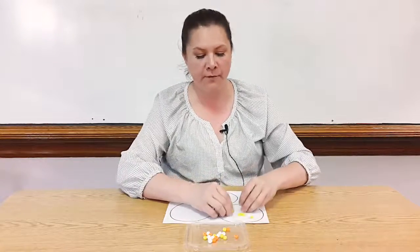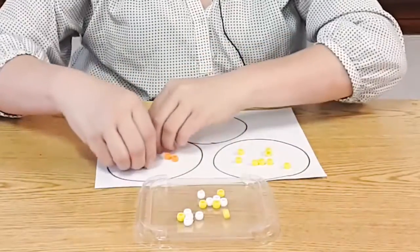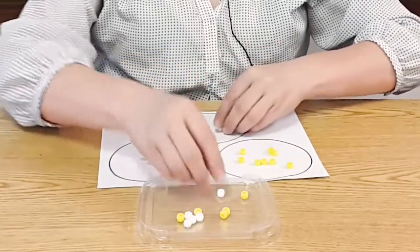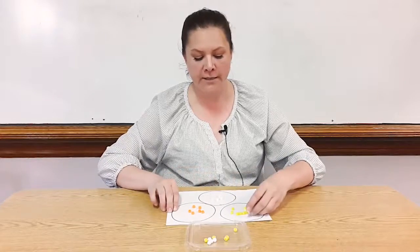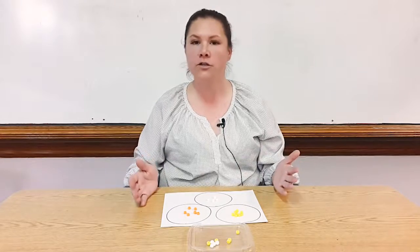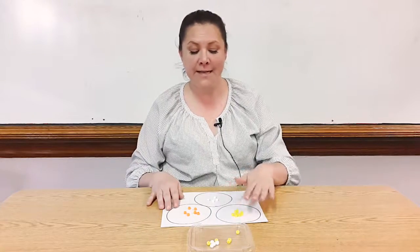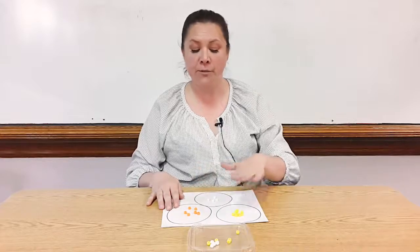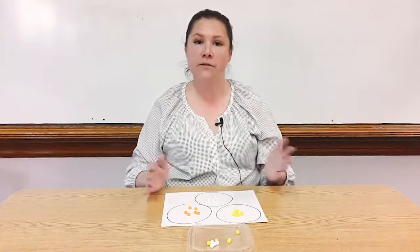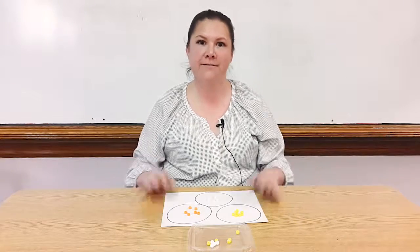I'm going to sort some of the beads by color — I'll put the yellow over here, the orange over here, and the white over here. Then you can ask your kids: how did you sort your beads? You want them to say I sorted them by color, and then ask them to explain: I put the yellow here, the orange here, and the white ones here. And that's one way you can teach sorting by color to your students. Thanks.